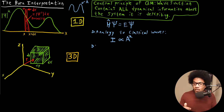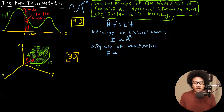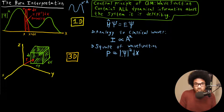Thinking about quantum mechanics, we can use the square of the wave function in a very similar way. If we want to figure out the probability of the location of a particle, that's going to be equal to the square of the wave function. And in one dimension, we would have the volume element dx. Integrating over this probability distribution would give you the probability of a particle being in a particular region of space.